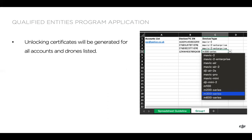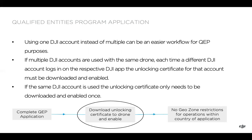Unlocking certificates are going to be generated based on all accounts listed. If you had multiple accounts listed in column one, there would be unlocking certificates generated for all drones for all accounts provided — you don't need to list accounts multiple times. That said, we do recommend utilizing just one DJI account if it works for your workflow. If you're using multiple DJI accounts with the same drone, each time a DJI account logs in, the unlocking certificate for that account must be downloaded and enabled. If you're using the same DJI account, the unlocking certificate only needs to be downloaded and enabled once, which really simplifies the process.